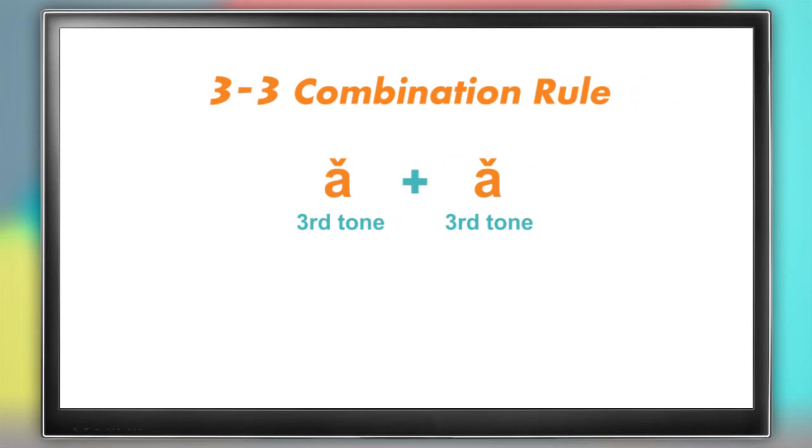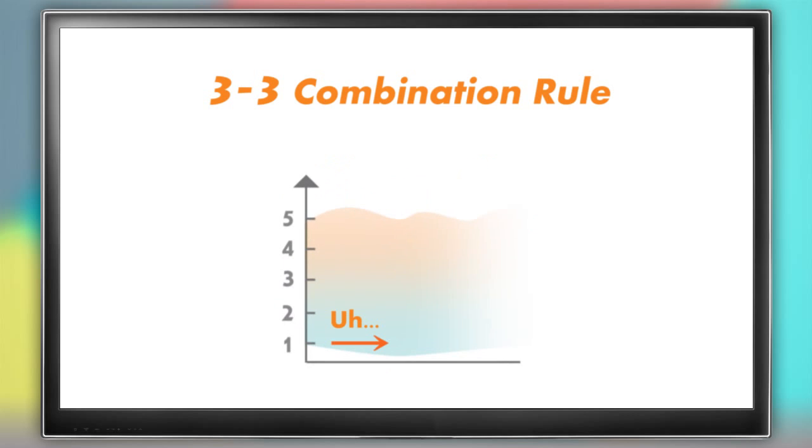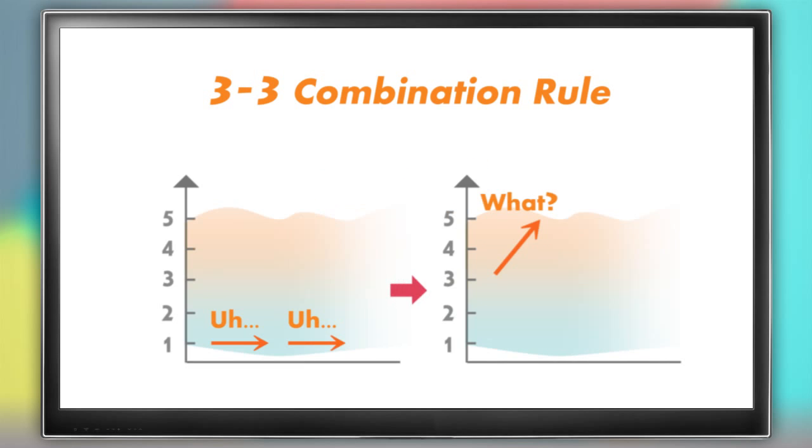I'll say it again: if you have two third tones or two low tones, the first one is pronounced with a second tone or a rising tone instead of a low tone. So instead of 'ah ah', you have 'wa ah' - second and then third, rising then low.